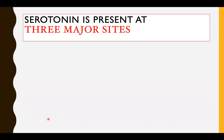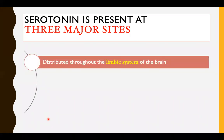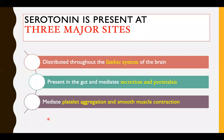Where is serotonin present? It is present at three major sites: in the brain in the limbic system, which is involved with the regulation of emotions; in the gut, where it mediates both secretion and peristalsis — in fact, a large amount of serotonin is present in the gut; and in the platelets, where it mediates platelet aggregation and smooth muscle contraction.